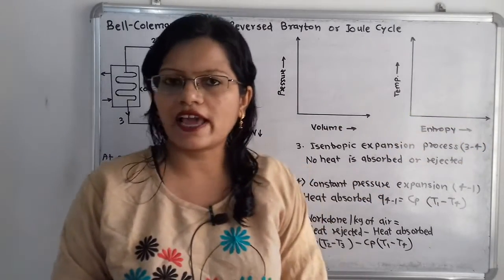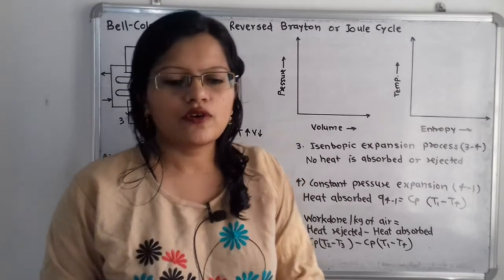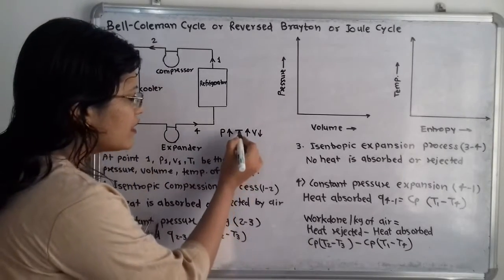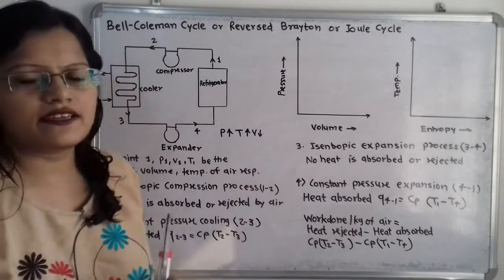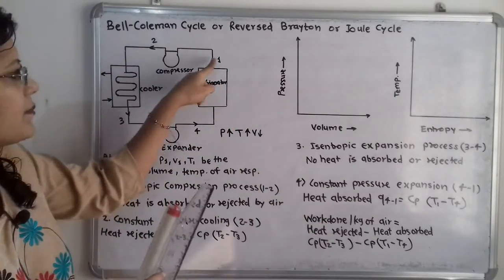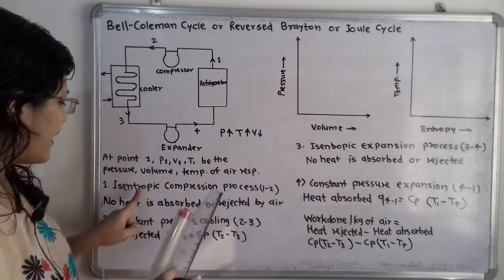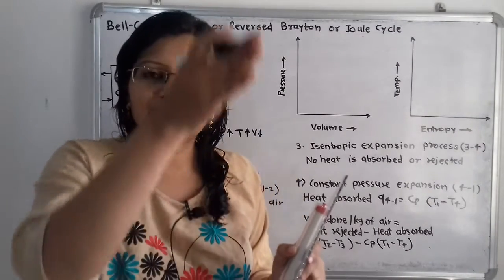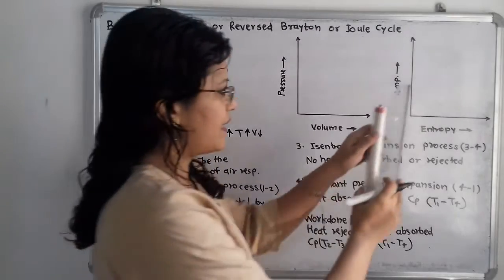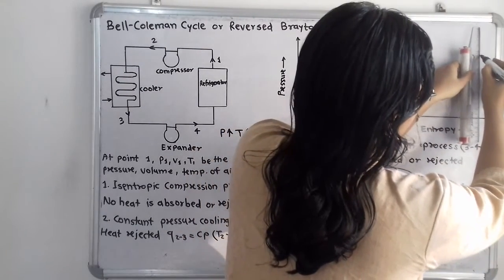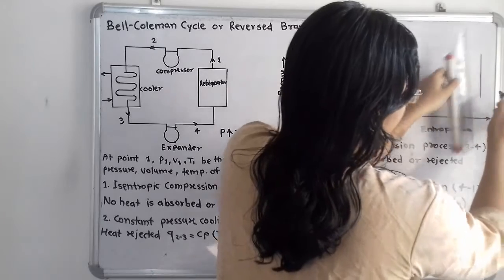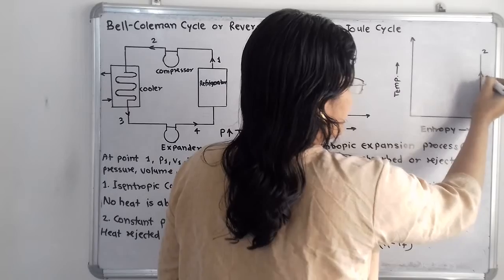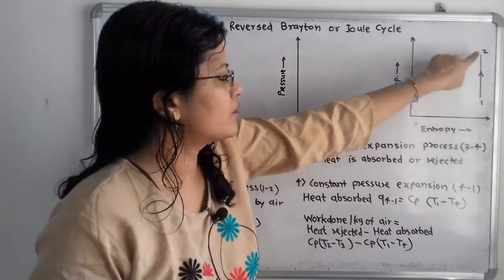We will first draw the temperature-entropy diagram. Temperature is increasing, so point 2 will have more temperature than point 1. Entropy remains constant, so we draw a straight vertical line. Point 1 is at the bottom and point 2 is at a higher temperature. This is process 1 to 2.